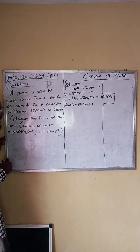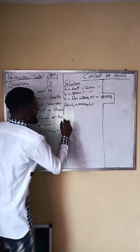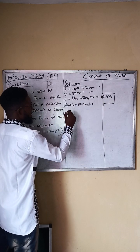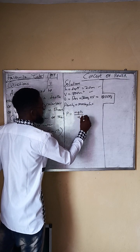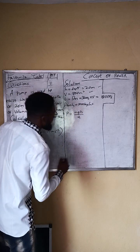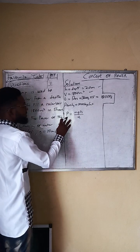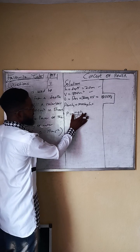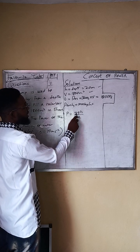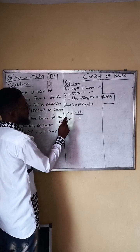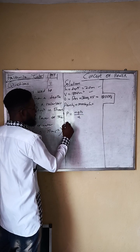Now we solve using the equation of power, which is P = mgh over time. We are looking for power. However, from this equation we notice we don't have mass — but we do have density, so we will use density to find mass.